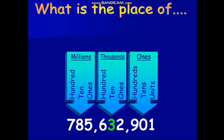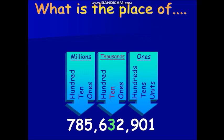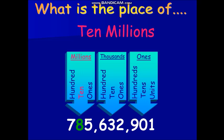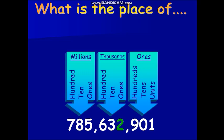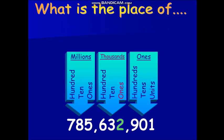How about the number 3? 10,000 is correct. Now what is the place value of 8? 10,000,000 is correct. Now what is the place value of 2? Thousands is correct. How about 0? Tens is correct. Great job, guys.